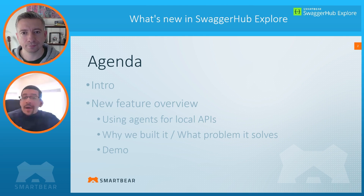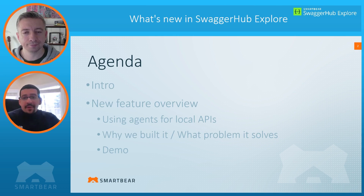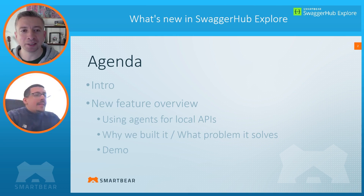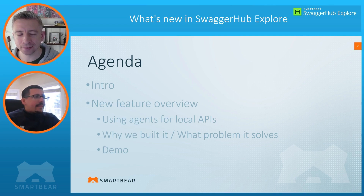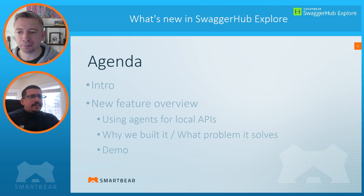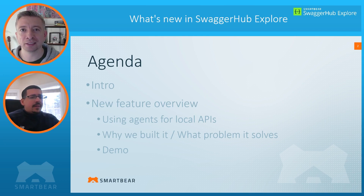You can also subscribe and publish to Kafka channels. What we'll be talking about today is the addition of using agents for exploring local or private APIs. Maybe you want to give everyone a bit of an overview as to what this feature is all about and why we built it.